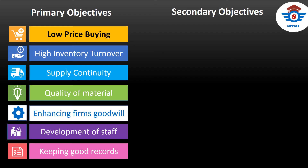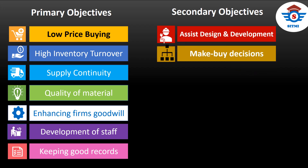Along with primary objectives, the materials department is externally focused and can help many other departments. It also has secondary objectives. The first is to assist in designing and developing new materials and products that may be profitable for the organization. The next is to support make-or-buy decisions — defining whether to make material in-house or buy from external suppliers, considering all feasible solutions like cost, time, expertise, quality, and other parameters.